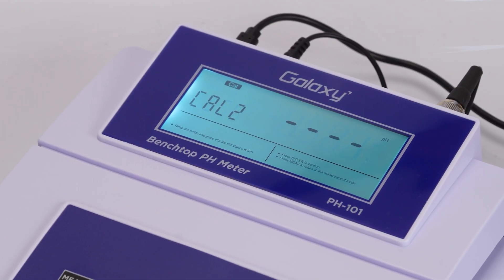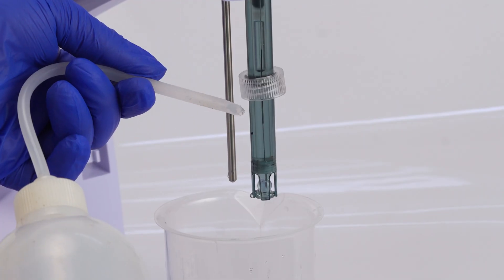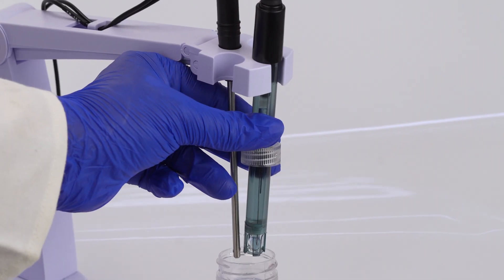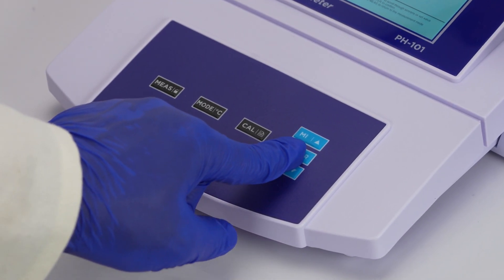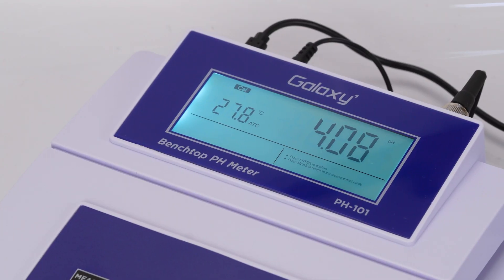When cal 2 displays, rinse the electrode, immerse it in the second buffer pH 4.01, and press enter.